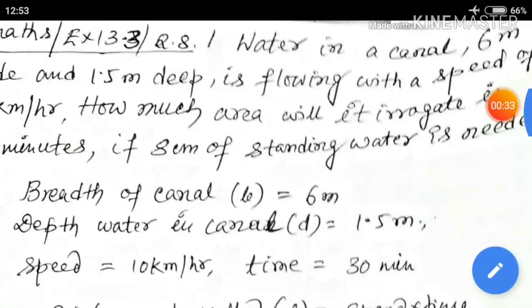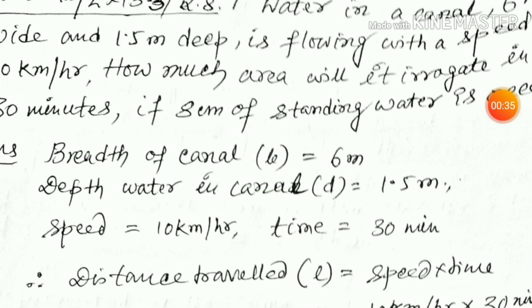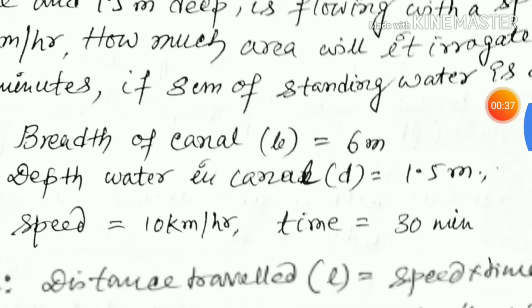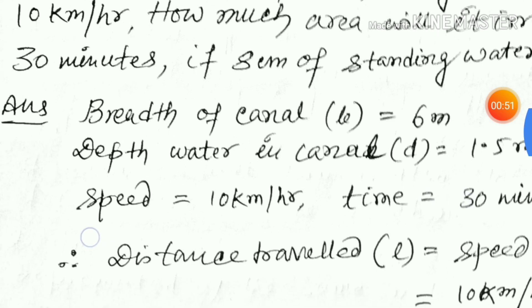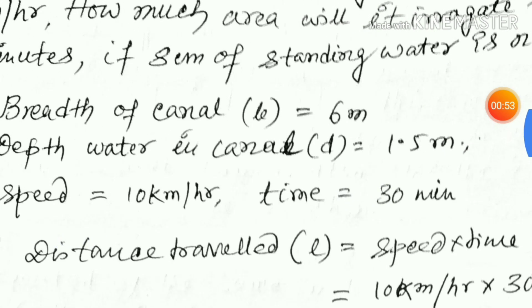Breadth of canal (b) = 6 meter. Depth of water in canal (d) = 1.5 meter. Speed = 10 kmph, time = 30 minutes.